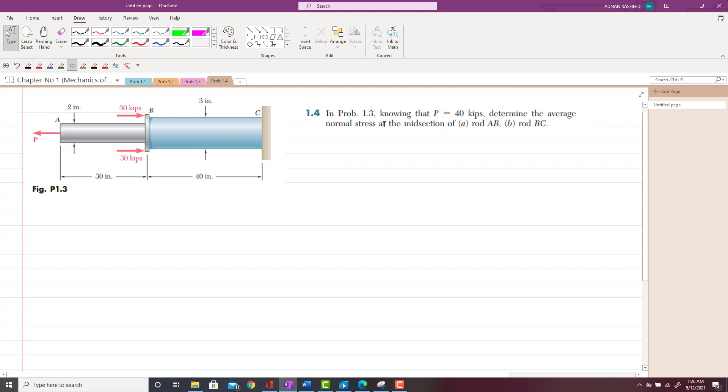So determine the average normal stress in the midsection of rod AB and BC. If you have watched the previous lectures, you will be able to understand what it wants. So it is given now that this P is 40 kips.